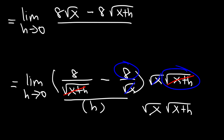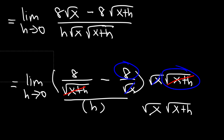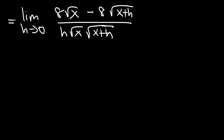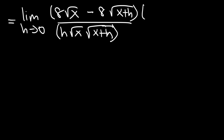And on the bottom, simply rewrite these things together — it's going to be h times the square root of x times the square root of x plus h. Now since we still have radicals in the numerator, we need to multiply the top and the bottom by the conjugate of the numerator. And so that's going to be 8 square root of x plus 8 square root of x plus h, divided by the same thing.